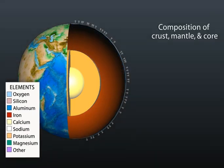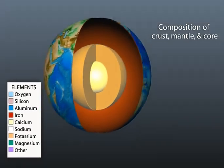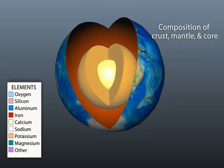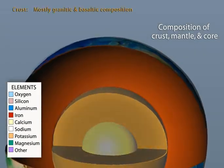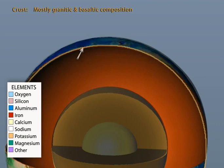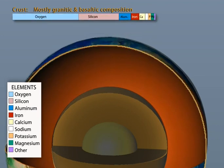The basic layers of the Earth are grouped by their chemical composition. The crust is made of chiefly eight major elements, shown here by their relative abundance: oxygen, silicon, aluminum, iron, calcium, sodium, potassium, and magnesium.